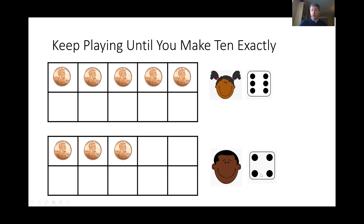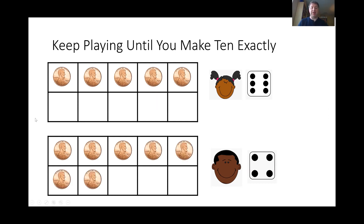The boy rolled and he rolled a four. Does he have space to add four onto his 10 frame? Sure does. He has seven spaces on his 10 frame, so he has room for four more. And that's what his 10 frame looked like. Nobody has won. The girl needs five more to win, and the boy only needs three more to win. So they're going to have to keep playing and hopefully roll enough to add more to their 10 frames to win the game.